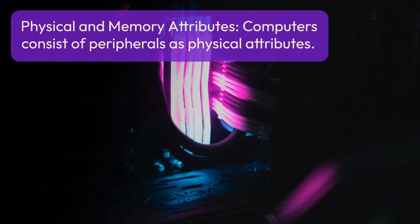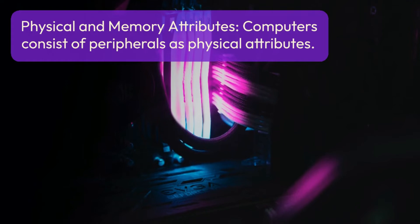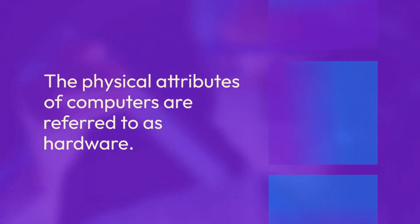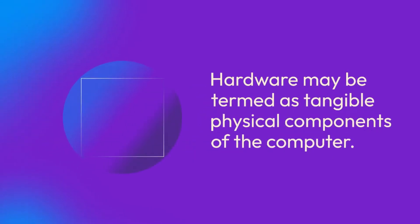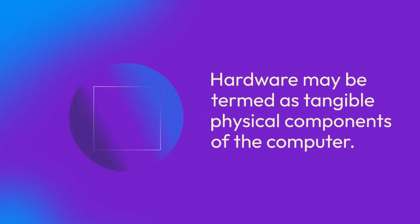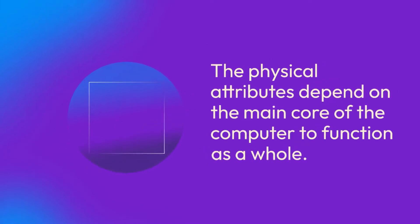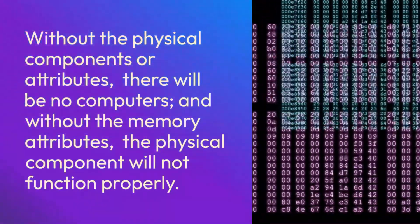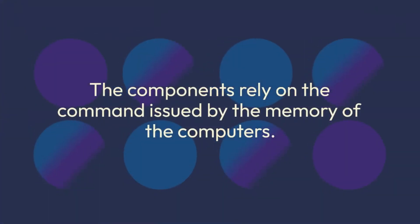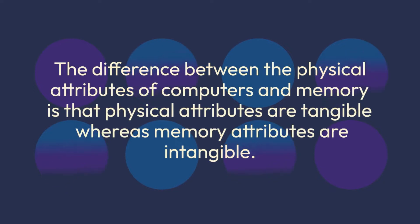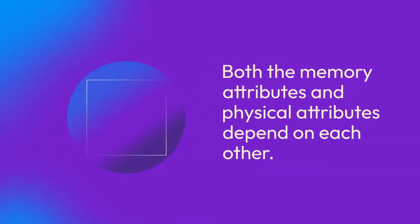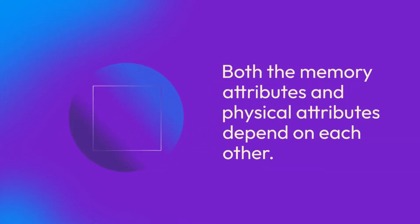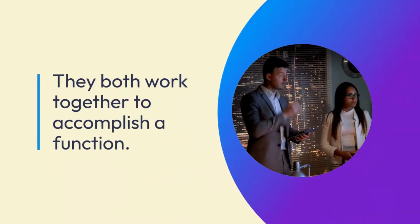Physical and memory attributes. Computers consist of peripherals as physical attributes. The physical attributes of computers are referred to as hardware — tangible physical components of the computer. The physical attributes depend on the main core of the computer to function as a whole. Without the physical components or attributes there will be no computers, and without the memory attributes the physical component will not function properly. The components rely on the command issued by the memory of the computers. Physical attributes are tangible whereas memory attributes are intangible, yet both depend on each other and work together to accomplish a function.